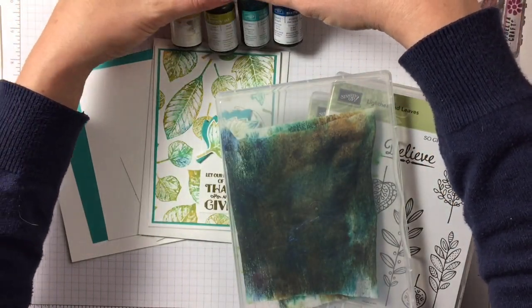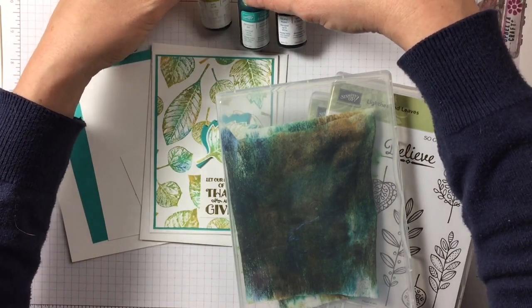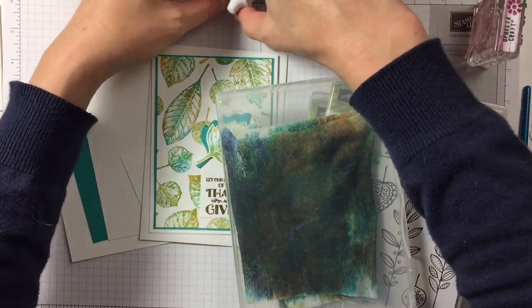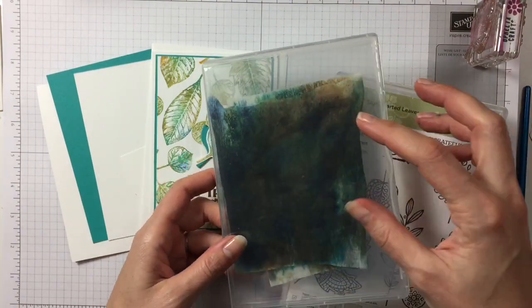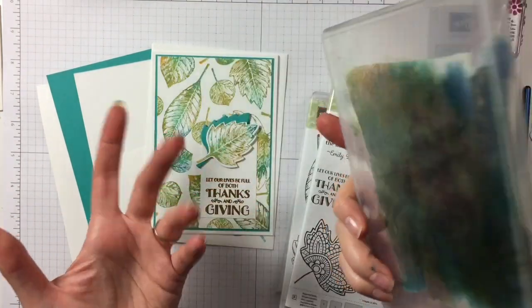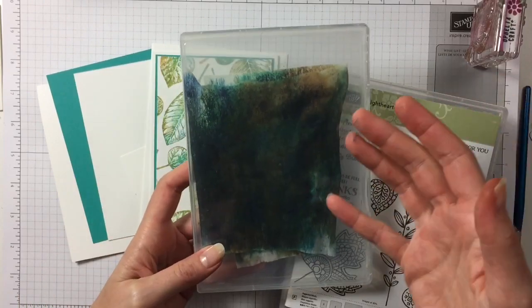I have been stamping with my own homemade ink pad which I made with various colours. Hello Honey, Old Olive, Bermuda Bay and Pacific Point. And of course, the drops of ink are in there. It's not finished. So I'm just going to keep on stamping before I chuck it out.